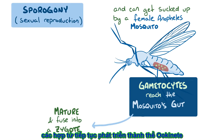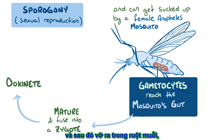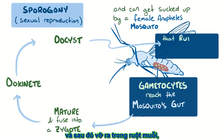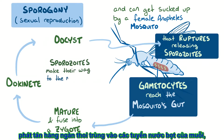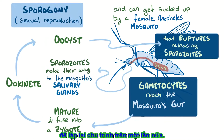The zygote then goes on to develop further, and it becomes an ookinete, and then an oocyst that ruptures in the mosquito's gut, releasing thousands of sporozoites which navigate their way into the mosquito's salivary gland, in order to repeat the cycle all over again.